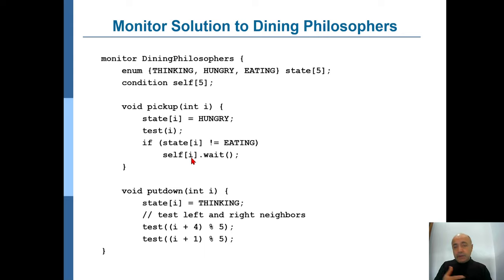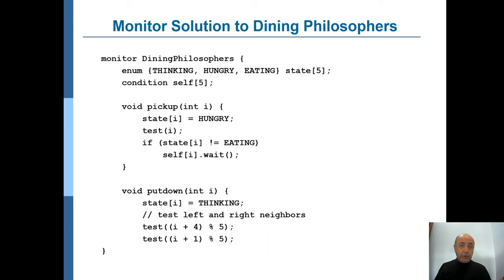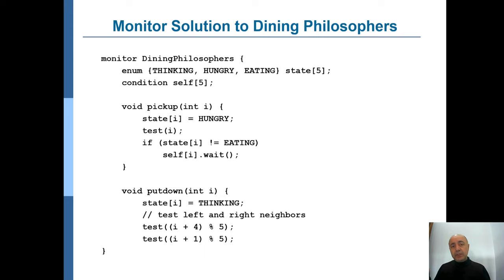This philosopher is waiting because some other philosopher — one of its neighbors — is eating and the chopsticks were not available. That neighbor, hopefully at some point, will get full and want to release both chopsticks because they are done with eating. So that philosopher will call the put-down method, specifying its own ID. Since that philosopher wants to stop eating, the state is changed to thinking, and the philosopher calls the test method again — but this time not with its own ID, but with the IDs of its left and right neighbors.